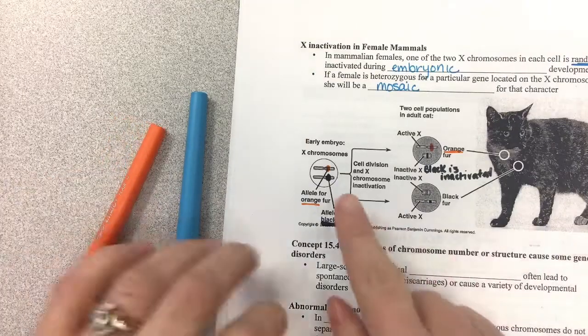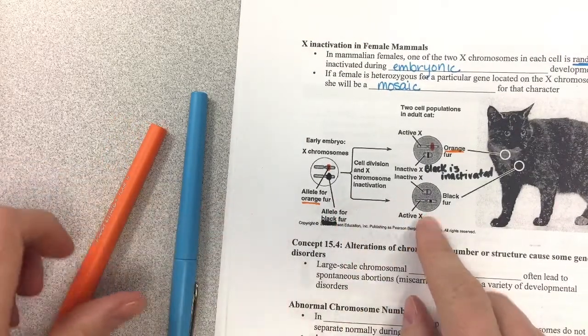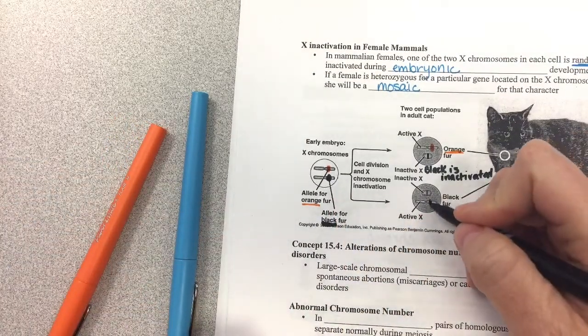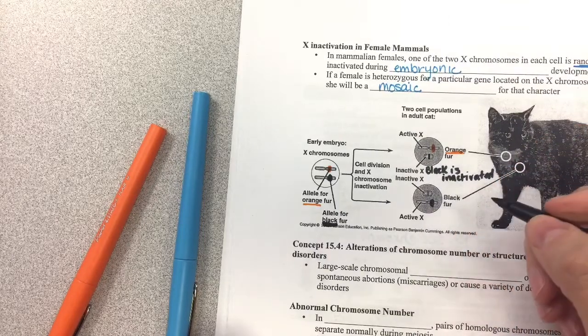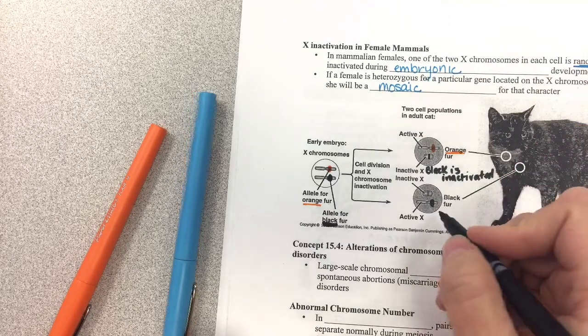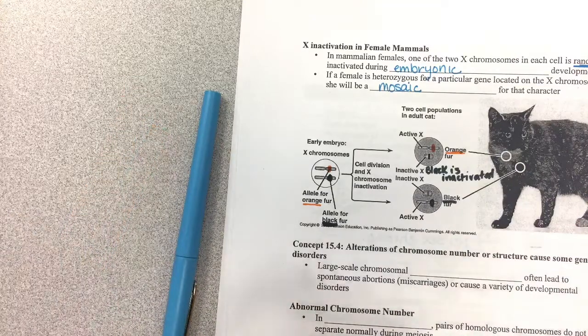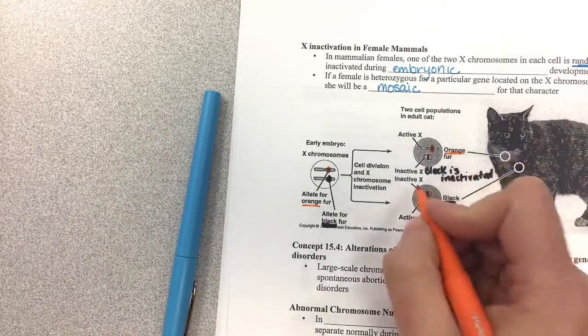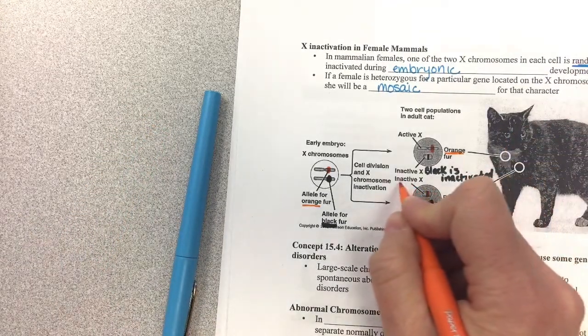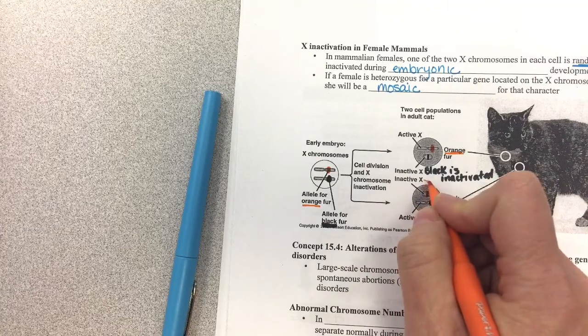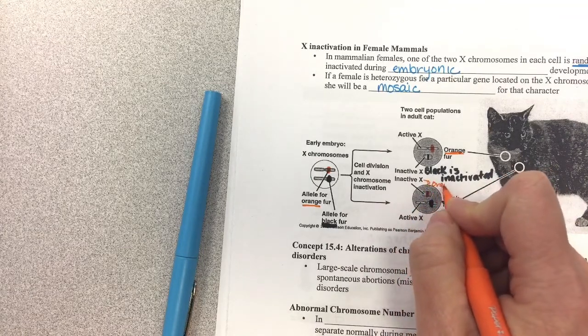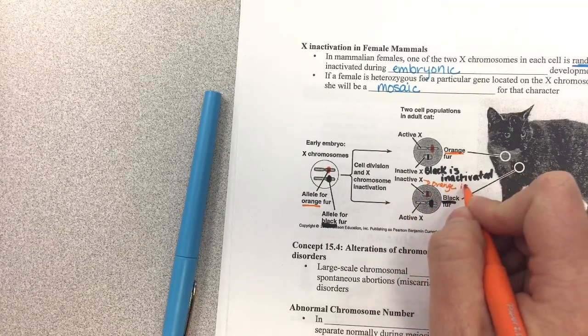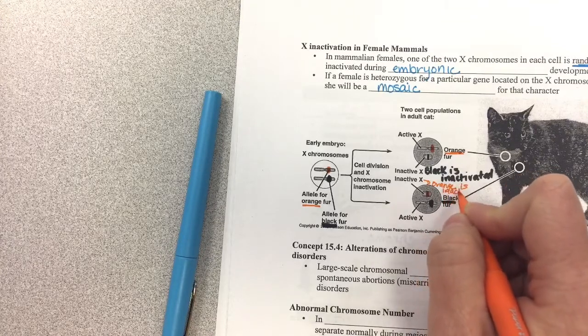And in some cells, it may be just the opposite. The black fur is active, and the orange one becomes inactivated. So the inactive X is inactivated. And it's totally random.